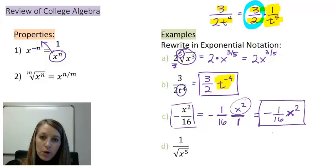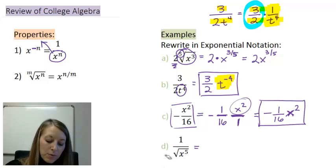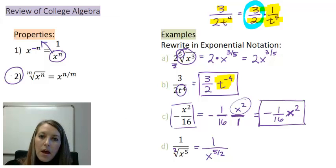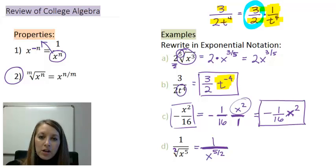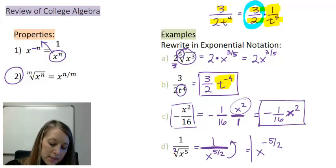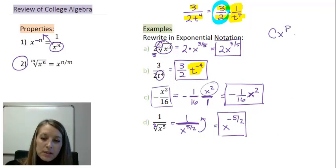Part D requires two steps. First, since there is no number specified for the root, we know it's a square root, so the assumed number is 2. Rewriting just the root gives x to the 5 over 2. But that's still in fraction format, which we can't differentiate directly, so I move it to the denominator — giving it a bad attitude — making it x to the negative 5 over 2. Now it's in the format: a constant times x to some power.